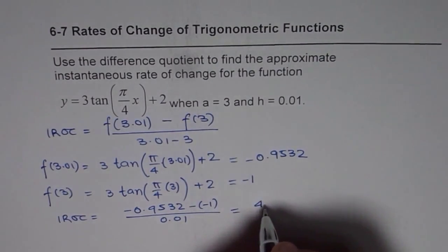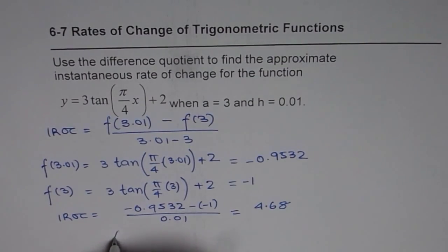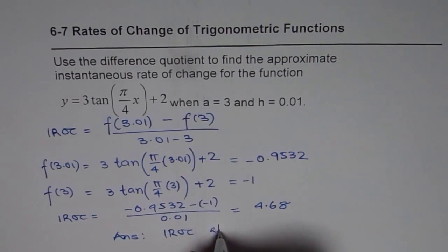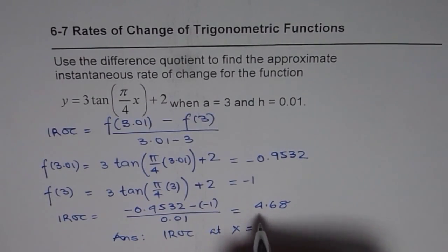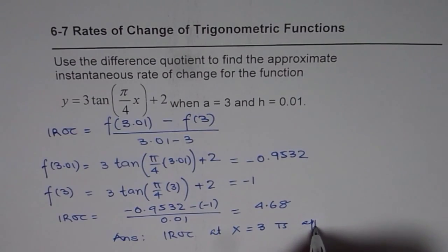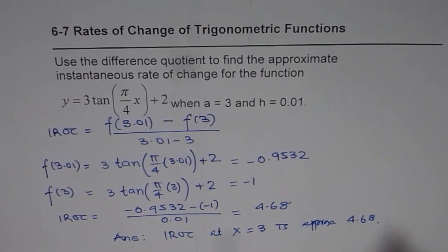So we get this value as 4.68. So we can write down our answer, and that is the instantaneous rate of change at x equals 3 is approximately 4.68. So that is how you can find it. Thank you.